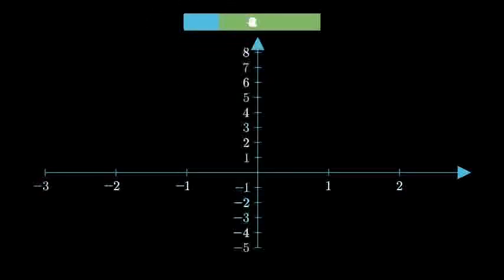Here's our coordinate plane. Let's plot each point from our table. First, the point negative 2 comma negative 4. Next, negative 1 comma negative 1.